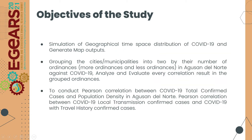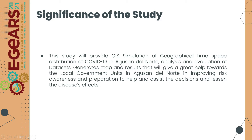These are the objectives of our study. First, emulation of geographical time-space distribution of COVID-19 and generate map outputs. Second, grouping the cities and municipalities into two by their number of ordinances — more ordinances and less ordinances in Agusan del Norte against COVID-19 — and analyzing and evaluating every correlation result in the grouped ordinances. Third, to conduct Pearson correlation between COVID-19 total confirmed cases and population density, and Pearson correlation between COVID-19 local transmission confirmed cases and COVID-19 with travel history confirmed cases.